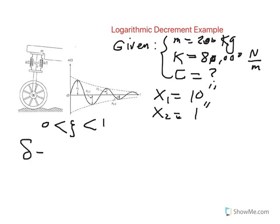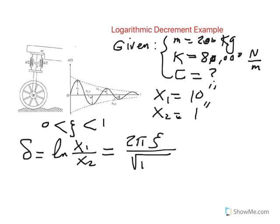Now, we also defined delta in the previous video as a natural log of X1 to X2. And that's equal to 2 pi zeta over the square root of 1 minus zeta squared.